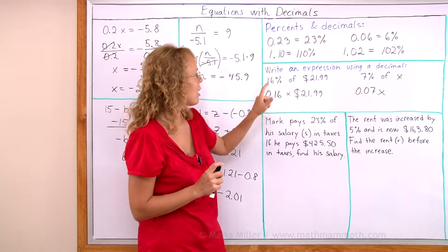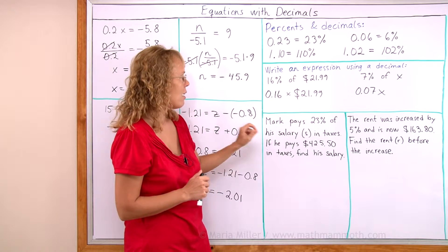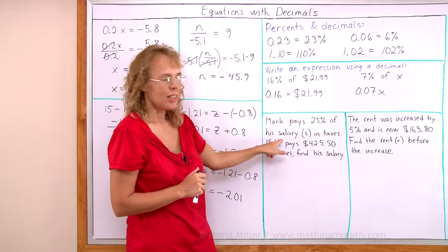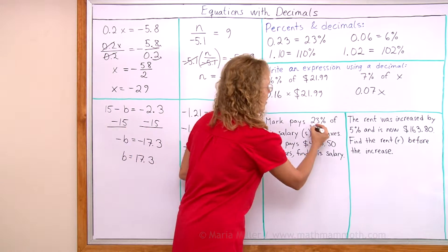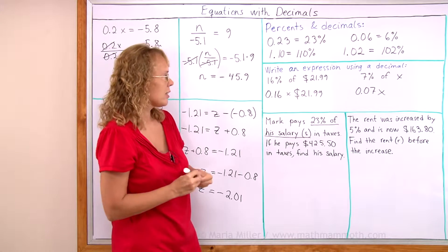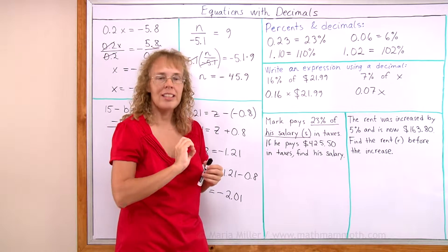This is the same situation as here. We have a percentage of something, right? We have 23% of his salary. So right here, 23% of his salary, s, is, just like here, it would be 0.23s.